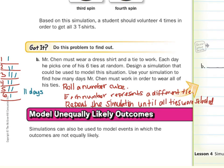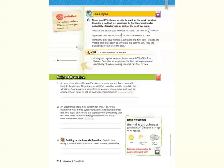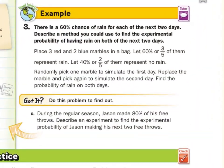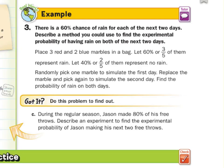For modeling unequally likely outcomes, simulations can also be used to model events in which the outcomes are not equally likely. In our third guided example, there is a 60% chance of rain for each of the next two days. Describe a method you could use to find the experimental probability of having rain on both of the next two days.